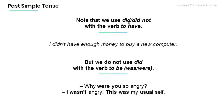Note that we use did or did not with the verb 'to have.' For example: 'I didn't have enough money to buy a new computer.' But we do not use did with the verb 'to be' — was or were. Instead we use it as follows: 'Why were you so angry?' 'I wasn't angry. This was my usual self.'